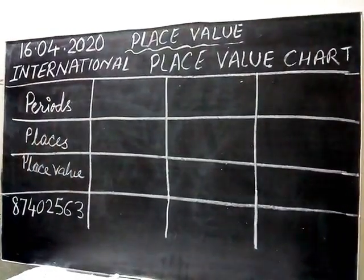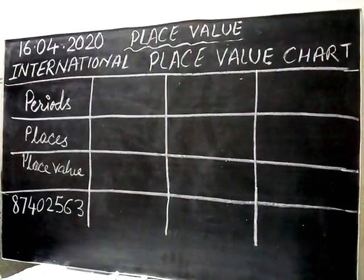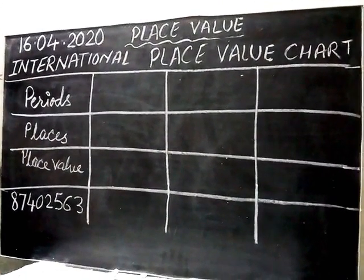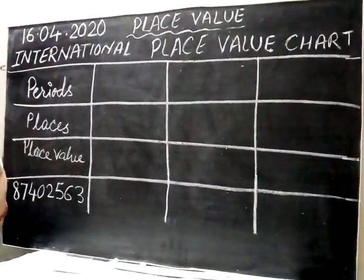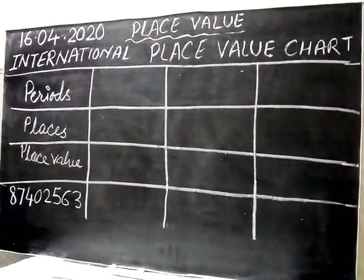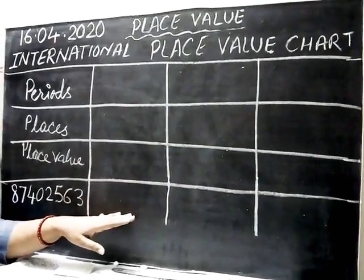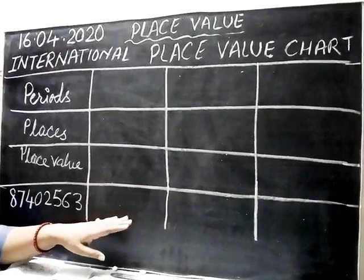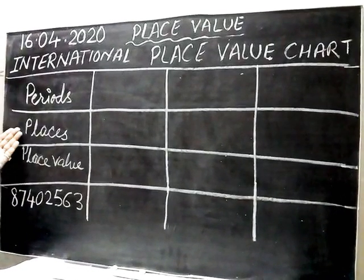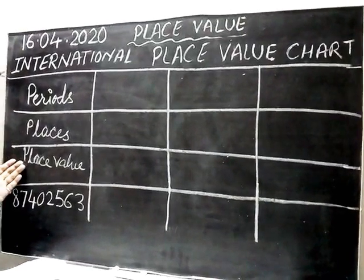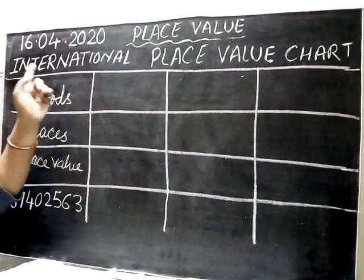So the Indian place value chart we have done in previous class, also in grade 4 and in grade 5, but only the period of crore increased in our Indian place value. This is a totally new topic for you now. So let's see what all things are there. Here, periods, places, and place values are all the same in Indian as well as in international.